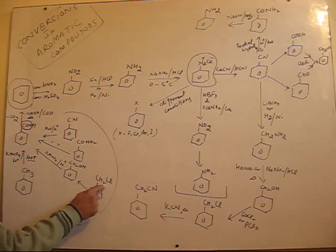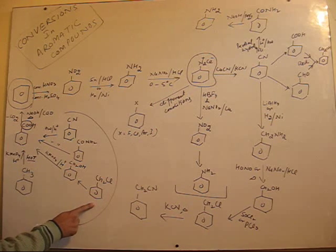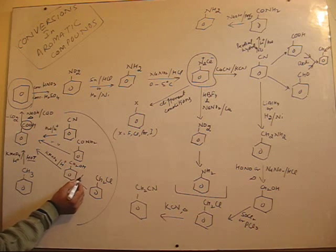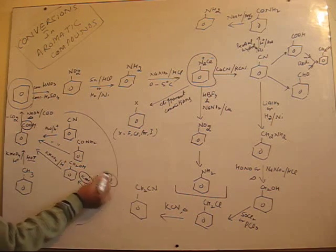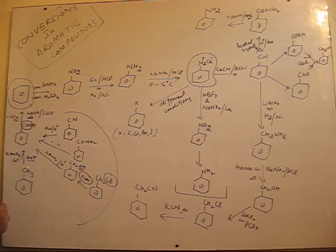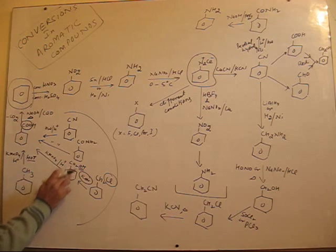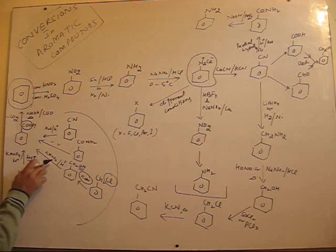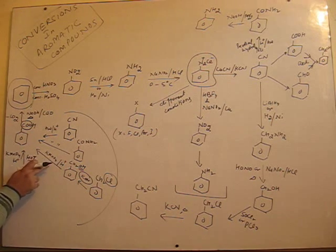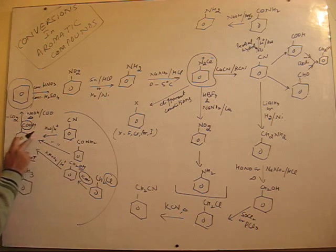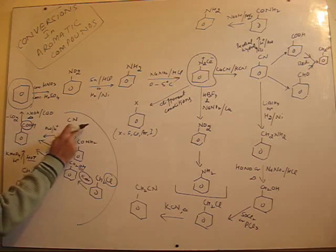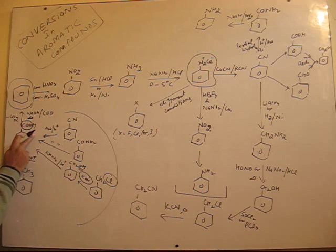If I start from benzyl chloride — when treated with aqueous KOH, the Cl is substituted by OH via a nucleophilic substitution reaction, giving benzyl alcohol. Benzyl alcohol, when made to undergo oxidation, changes to benzoic acid. Also, benzamide hydrolyzed gives benzoic acid, and cyanobenzene hydrolyzed gives benzoic acid.